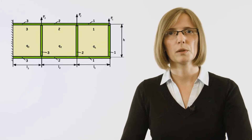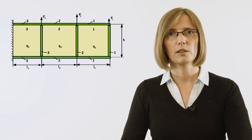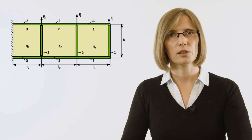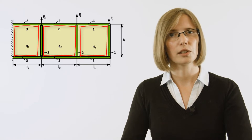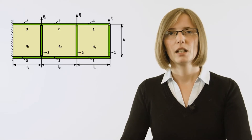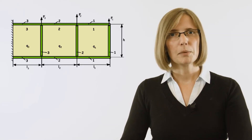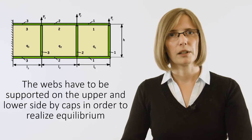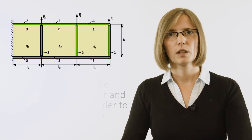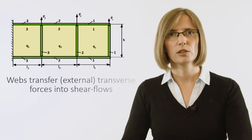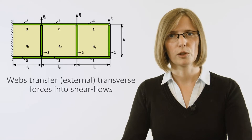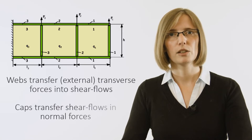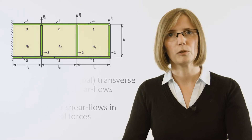The vertical forces will result in bending of the structure. When looking at bending, the function of the sheets or shear webs is essential. The webs have to be supported on the upper and lower side by the spar caps to realize equilibrium. The webs transfer the external vertical forces into shear flow, and the spar caps transfer the shear flow into normal forces.